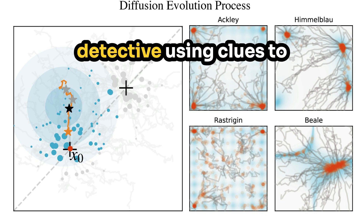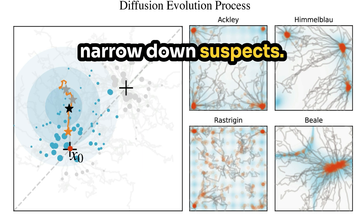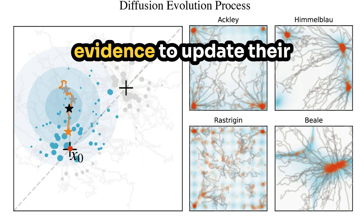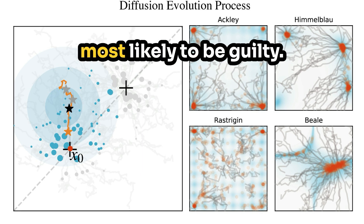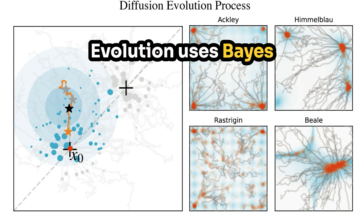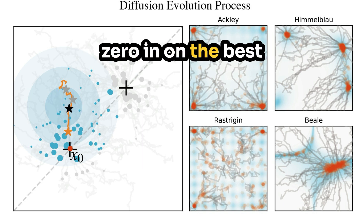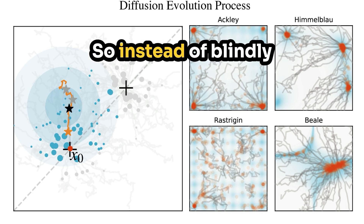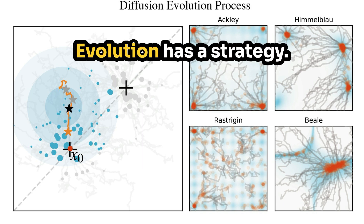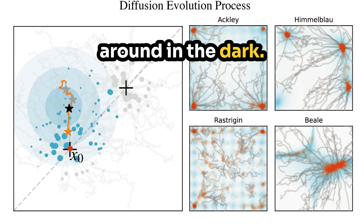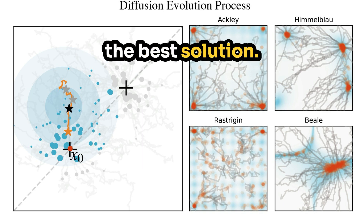Imagine a detective using clues to narrow down suspects. Bayes' theorem is like a detective's logic — it helps them use new evidence to update their beliefs about who's most likely to be guilty. In a similar way, Diffusion Evolution uses Bayes' theorem to efficiently zero in on the best solutions to a problem. So instead of blindly searching for the best solution, Diffusion Evolution has a strategy — like that detective with their clues. It has a calculated approach to finding the best solution.